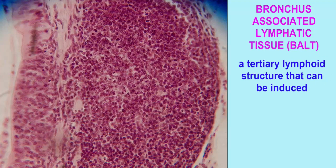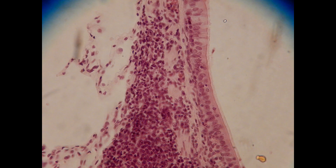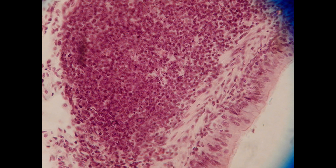As such, it would be classified as a tertiary lymphoid structure. Primary lymphoid structures, such as the bone marrow and the thymus, are places where white blood cells are made or mature.